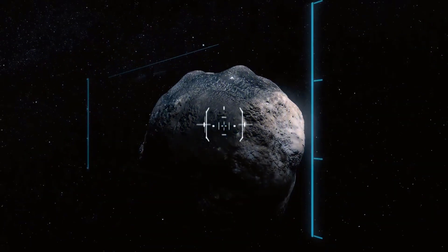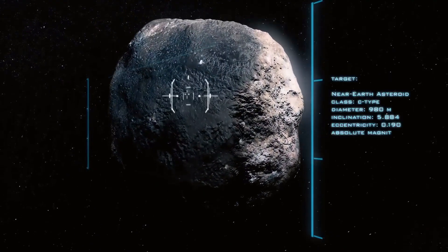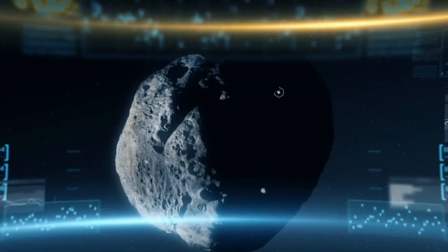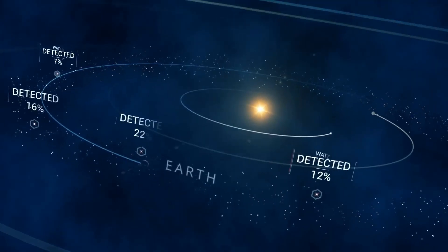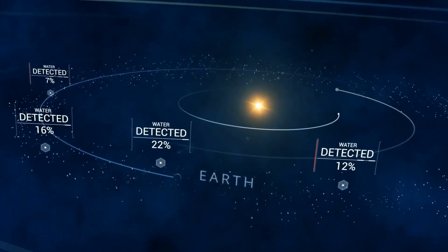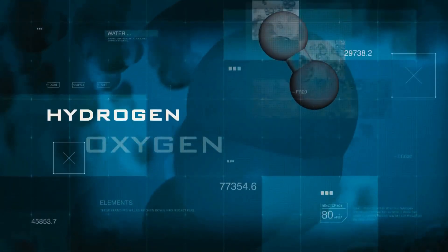Near-Earth objects are comets and asteroids that have been nudged by the gravitational attraction of nearby planets into orbits that allow them to enter the Earth's neighborhood. The scientific interest in comets and asteroids is largely due to them being remainders of material formed in the coldest part of our solar system.